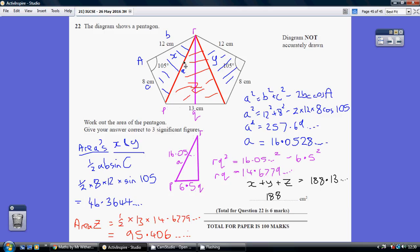So back to my red triangle Z, the area of that is half times base times perpendicular height, half times 13 times 14.6779, which is 95.406. So my red triangle is 95.406.